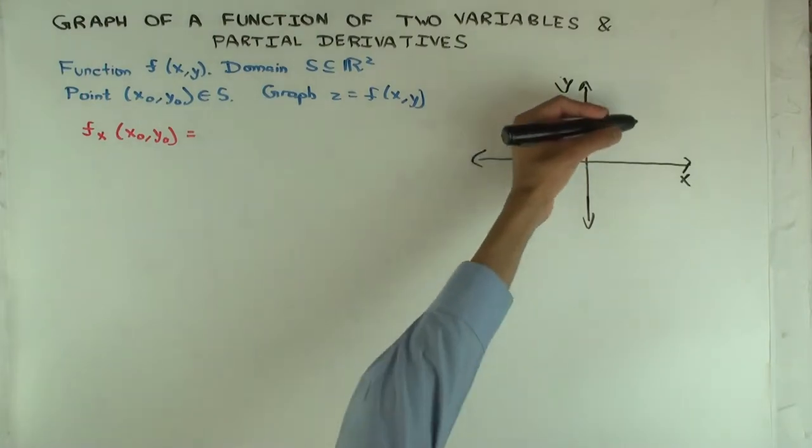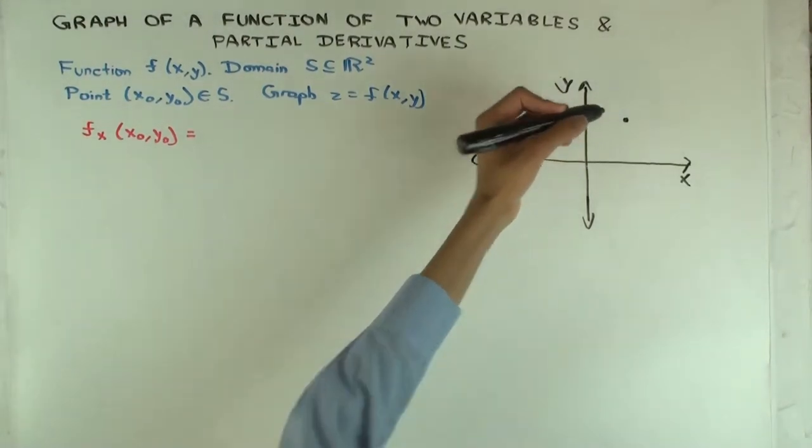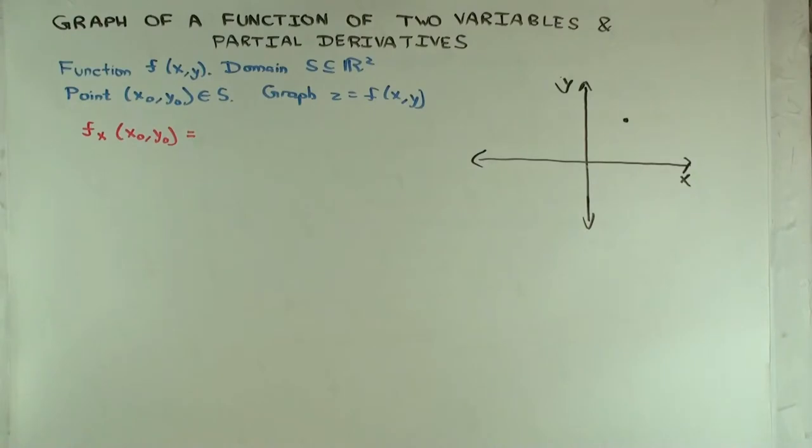Now, I have this point x0, y0 in the domain that's here. And I'm interested in the partial derivatives, f sub x of x0, y0 and f sub y of x0, y0. So, the first question is, can you remind me how this partial derivative is defined as an ordinary derivative? What's the definition?